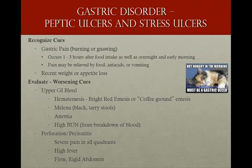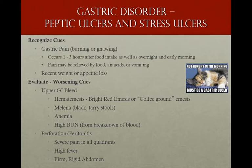Ulcer pain is burning or gnawing in the upper stomach, usually occurring one to three hours after food when acid is highest, and overnight or early morning when there's nothing to counteract the acid. The pain gets relieved by food, antacids, or vomiting. Weight or appetite loss can occur because the stomach hurts. The worst case is the ulcer eroding through and bleeding or perforating the stomach wall.